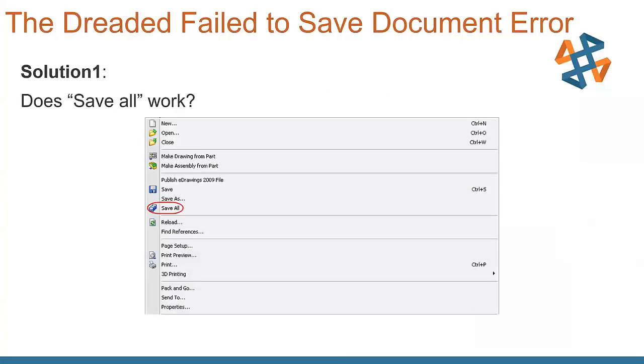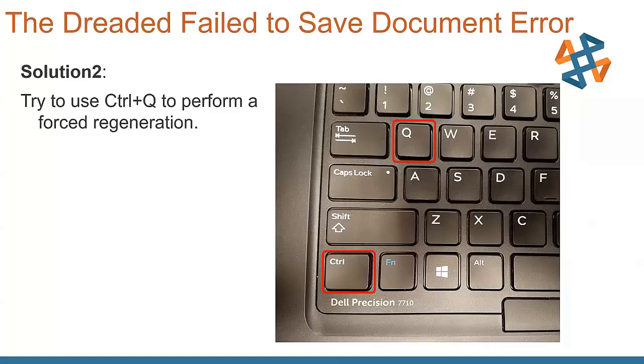First thing is, does save all work? It's in the file drop down menu, grabs the part and all the assemblies, or the assembly and all the subparts. Next thing, try to use control Q to force regeneration. A little bit stronger than just a standard rebuild. That will sometimes get you out of it or show you any errors that may be happening inside your file.